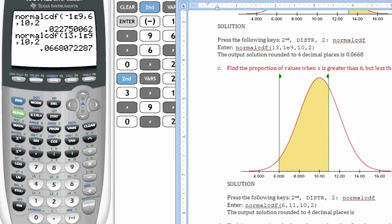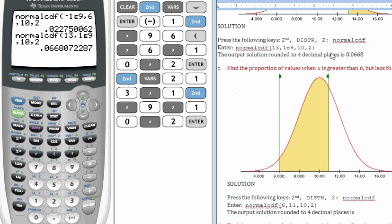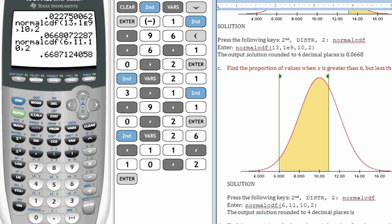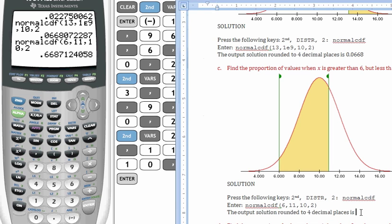Going on to part C. Find a proportion of values when x is greater than 6 but less than 11. I'm going to do a normal CDF, number 2, from 6 to 11, with a mean of 10 and a standard deviation of 2. Enter. And that solution is just about 67%, or 0.6687.